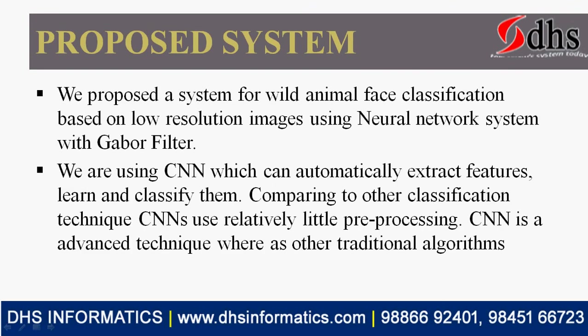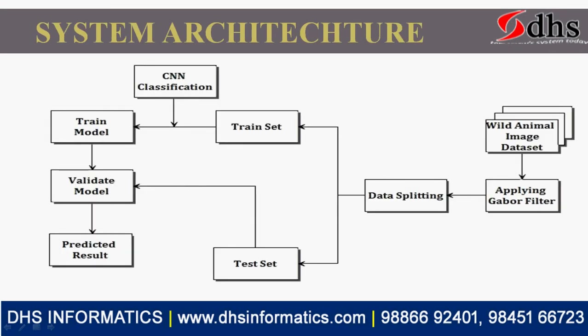In the proposed system we use low-resolution images and identify the animal based on its face, because CCTV cameras used on farmlands have low resolution. Even with low resolution, we can identify the animal properly using the Gabor filter and CNN, which automatically extracts features and classifies the animal type. The system then sends notification information via email or SMS to the concerned person.